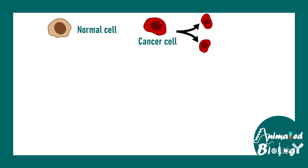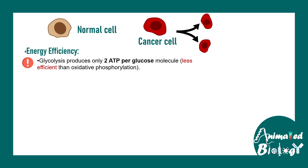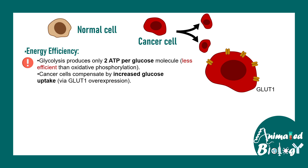When we look at the cancer cell, we have to understand it needs to divide. Dividing cells require a lot of energy, but this seems counterintuitive — cancer cells need energy, yet glycolysis produces less energy than oxidative phosphorylation. The energy efficiency for cancer cells is balanced differently: glycolysis produces only two ATP molecules, but cancer cells upregulate glucose uptake through several GLUT1 transporters, bringing in more and more glucose to ensure sufficient energy production.